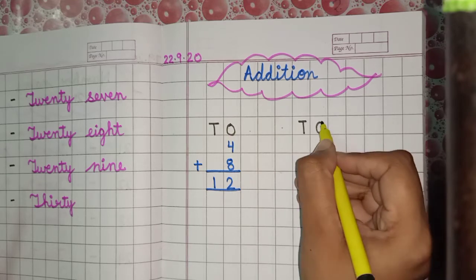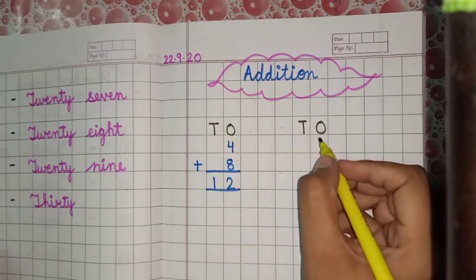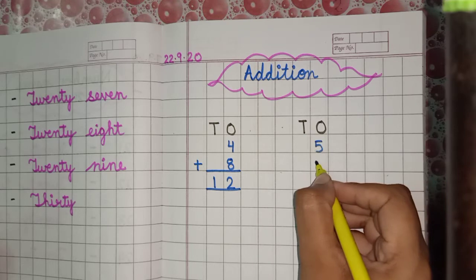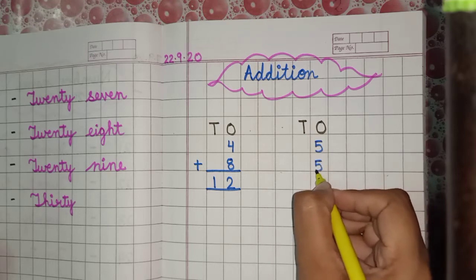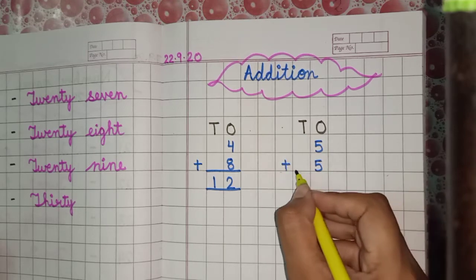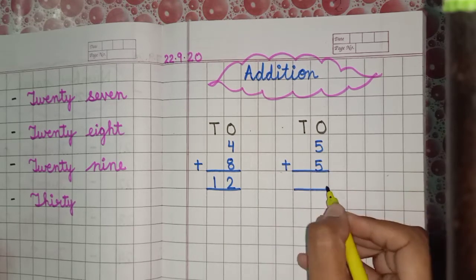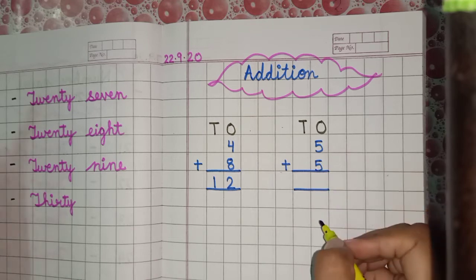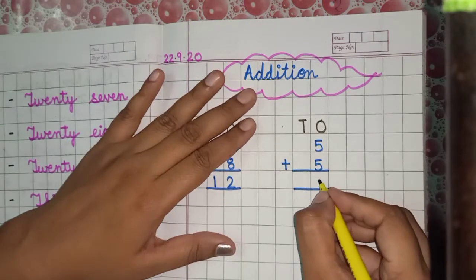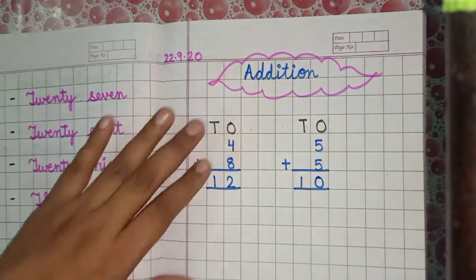Again, write tens and ones. Write five plus five, put sign of addition. Five and five is ten — write zero here and one here.